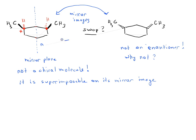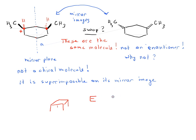They are mirror images of each other, but because this molecule has a mirror plane it's not chiral — they are the same molecule. It's kind of like the letter E: you draw a mirror image of E and it looks reversed, but you could rotate it 180 degrees and they would be superimposable. In chemistry, if two molecules are superimposable they are therefore the same.